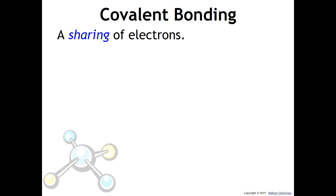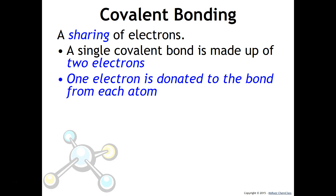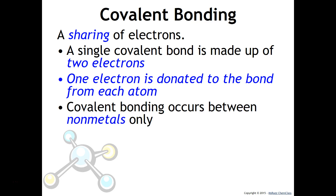Instead of a transfer of electrons, covalent bonding involves a sharing. A single covalent bond is made up of two electrons being shared between two atoms — one electron is donated to the bond from each atom. Covalent bonding occurs between non-metals only.